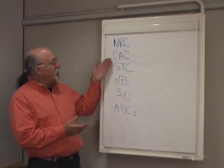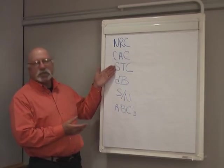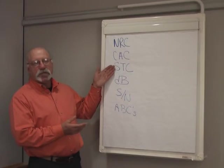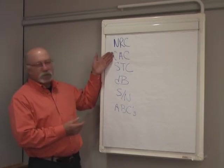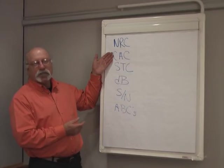STC is like the CAC, except the sound transmission class is for a wall. So it's a measure of the attenuation or blocking capability of the wall, whereas the CAC is a measure of the blocking capability of the ceiling.